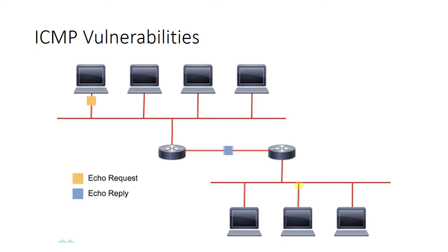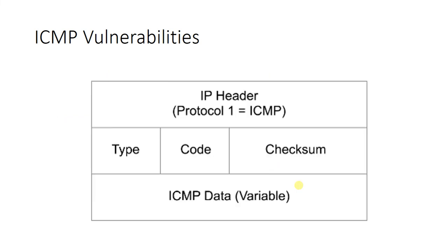The details of ICMP can be found in RFC 792. ICMP headers contain type and code information, and these type code fields can be manipulated to coerce devices to reply when they shouldn't. We will take a look at this usage as an attack vector shortly.